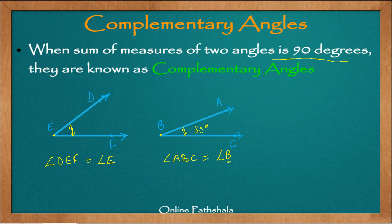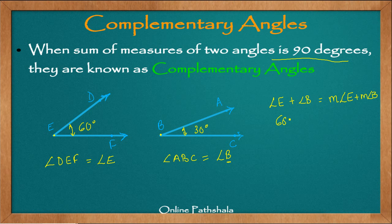Whereas angle D, E, F — when I take the measure of this — it is equal to 60 degrees. Now if we take the sum of angle E and angle B, that is angle E plus angle B, it actually means measure of angle E plus measure of angle B. But for simplicity we just write it as angle E plus angle B. Since we are adding here, it means we are adding the measures. Angle E is 60 degrees and angle B is 30 degrees. The sum comes out to be 90 degrees. Therefore, angle E and angle B, or angle A, B, C and angle D, E, F, are complementary angles.